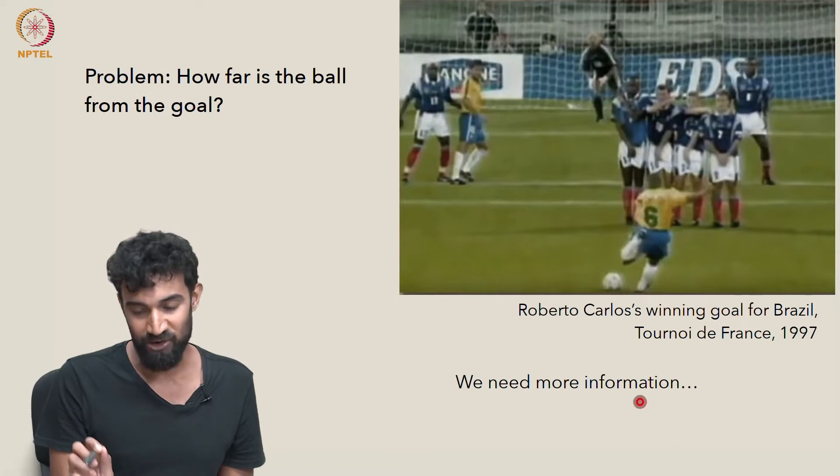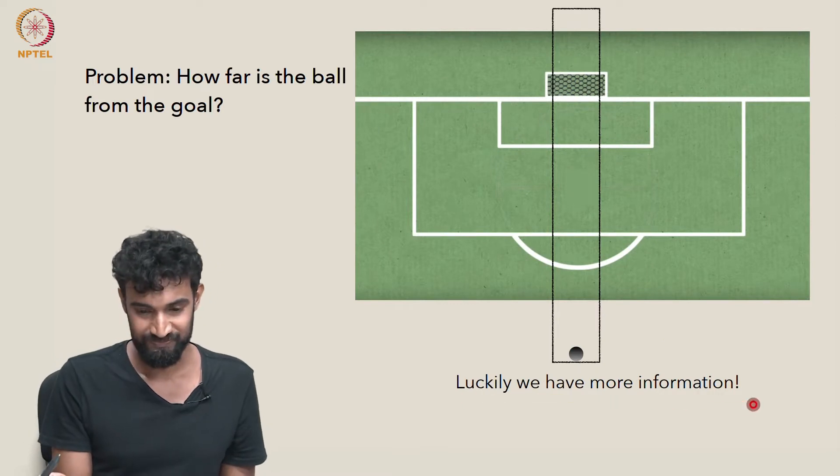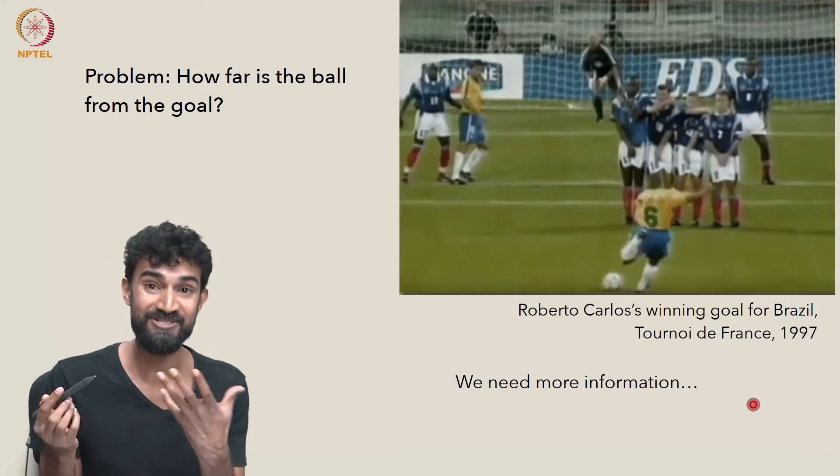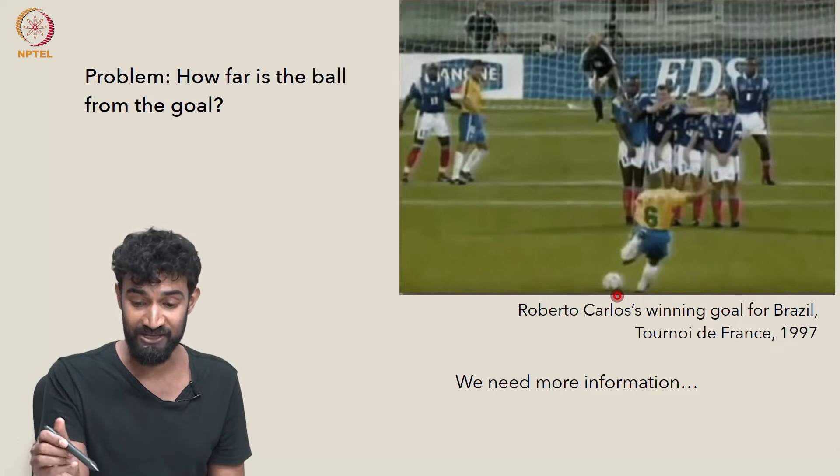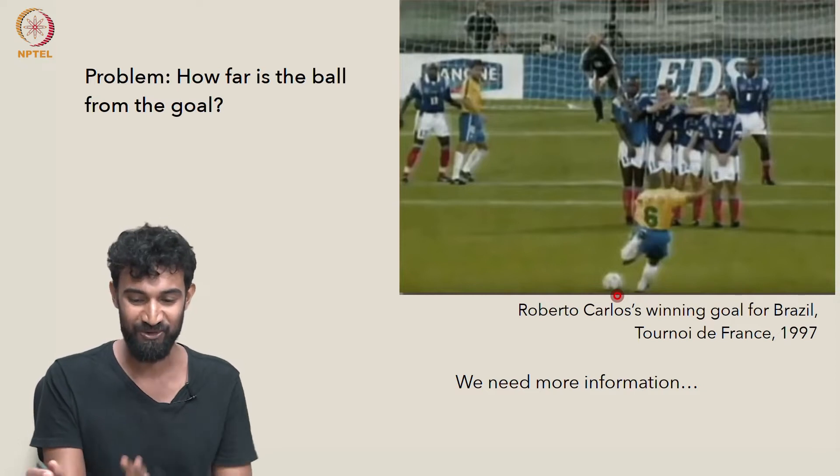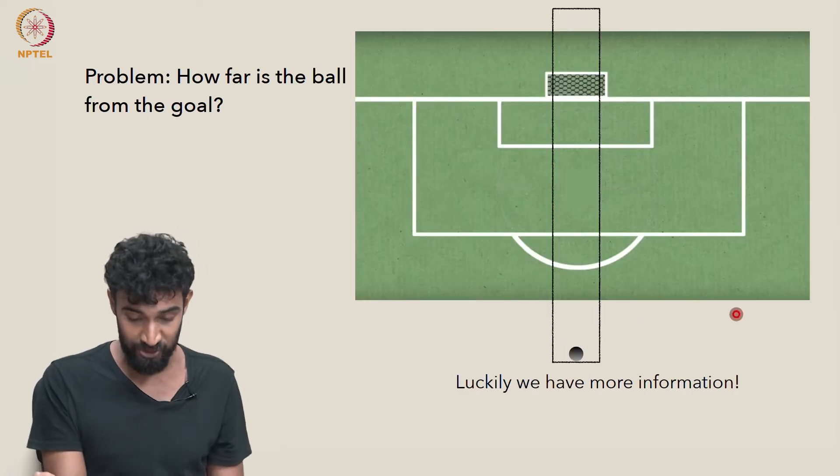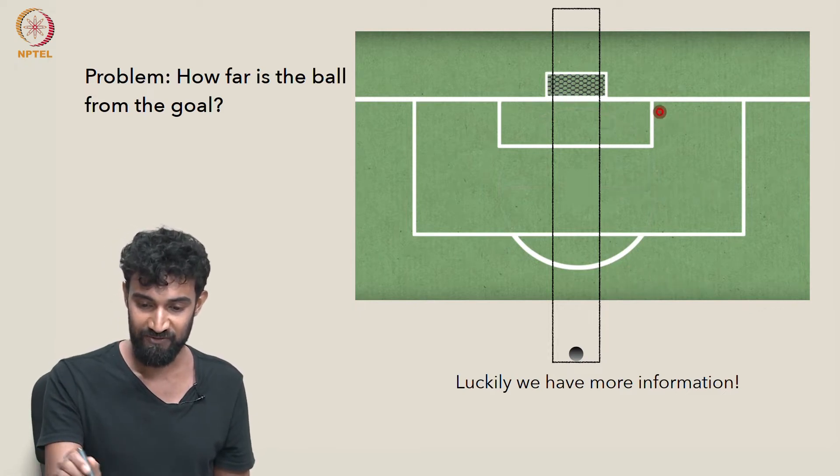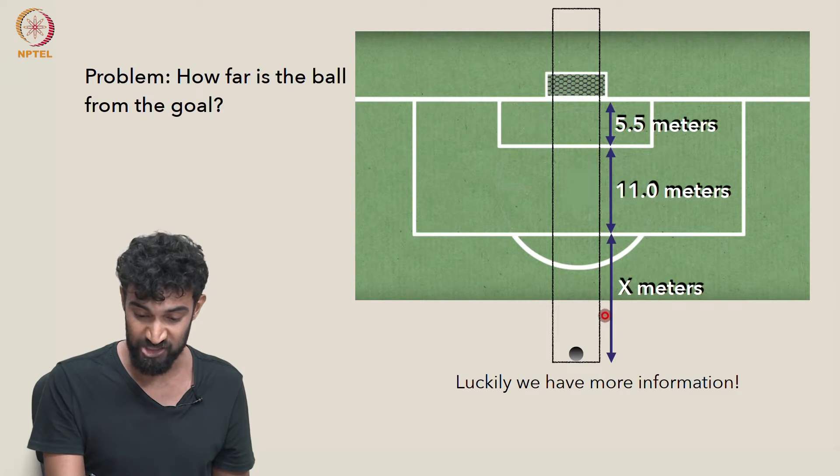So first of all, we need more information in order to solve this problem. And luckily, we have more information. In other words, we can't do it strictly from the photograph. We need to know something more, because from this photograph alone, we don't have any sense of what one foot is, or how big these people are, or anything. But luckily, we do know the dimensions of a football field from a bird's eye view. We know that it's 5.5 meters from this first line to the next line, and this is 11 meters. And finally, we can just call the distance from the ball to this line x meters.